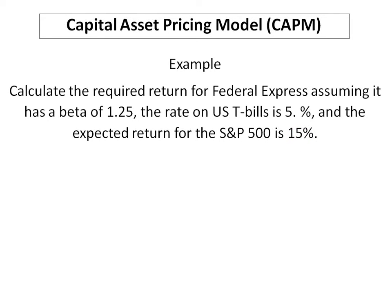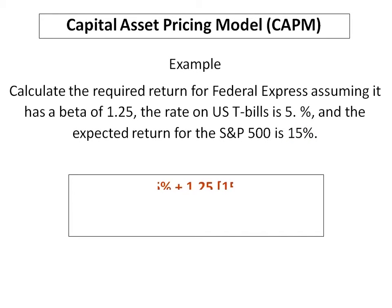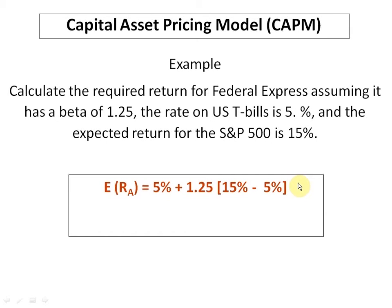Now let us compute the expected return on this stock of Federal Express. In our CAPM equation, we plug in our values: for the risk free rate of return we use 5%, for beta we use 1.25, and for the market rate of return we use 15%, then subtract the risk free rate of 5%. The calculated expected return on this asset is 17.5%. We have denoted the expected return on the asset as ERA, but you could also write it as K of A — that means the same thing.